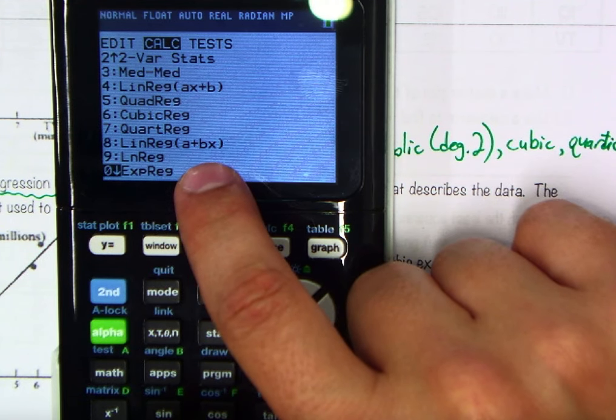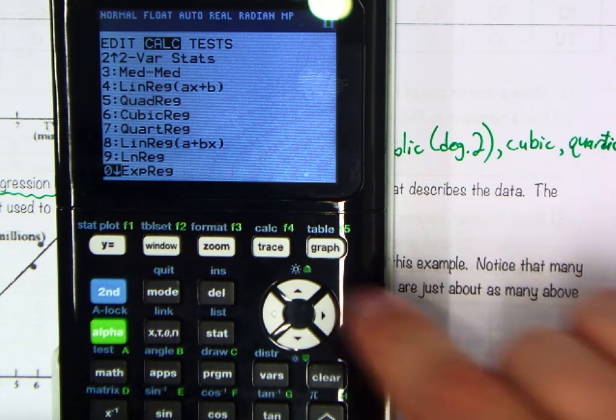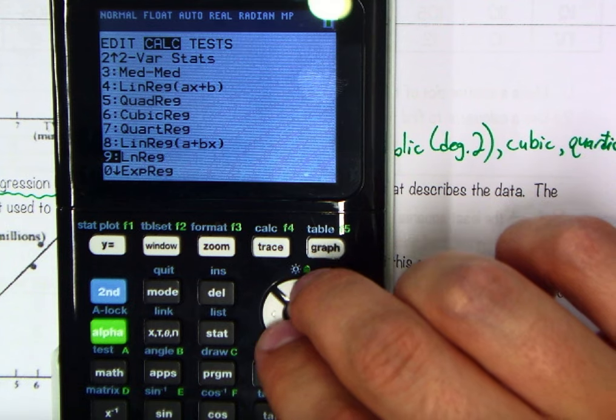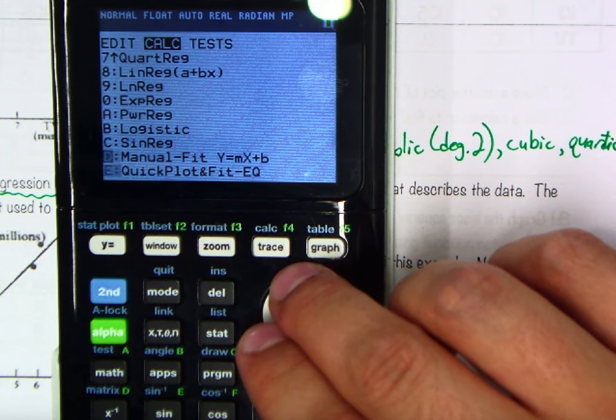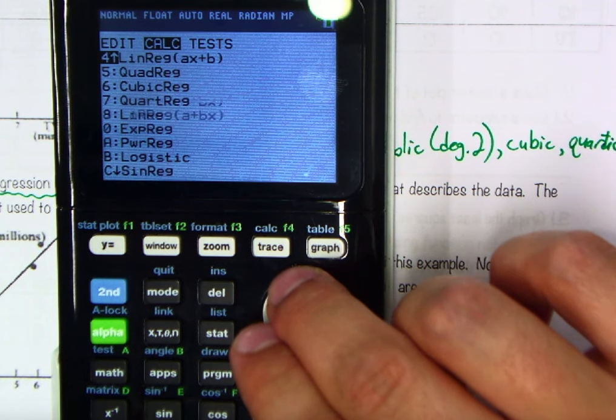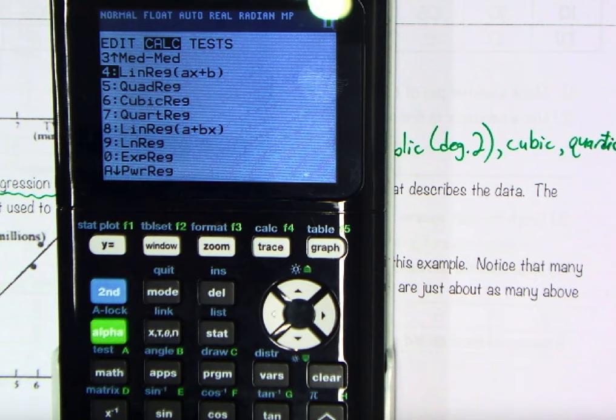So there's natural logarithmic regression, there's exponential regression, there are loads of options available here. All we really want right now is our first method known as linear regression, okay? So an ax plus b.